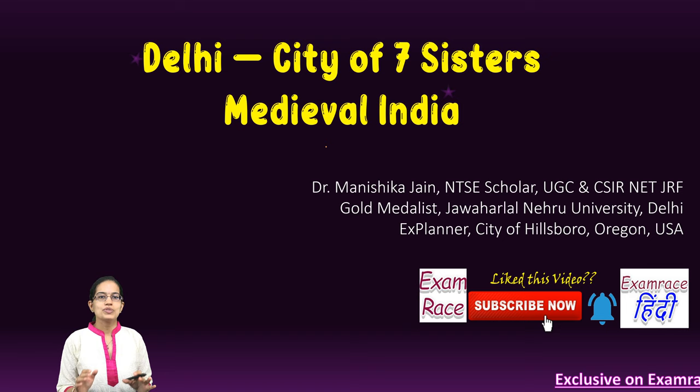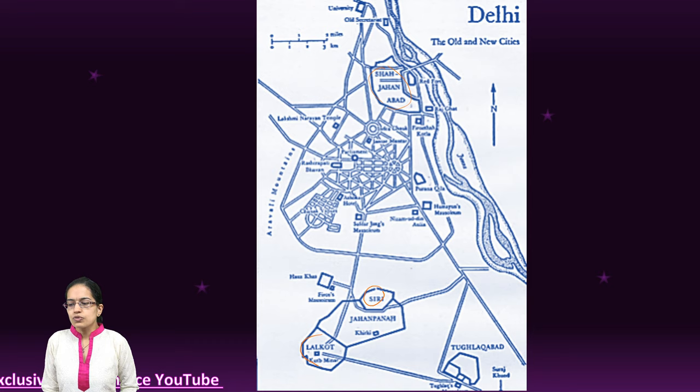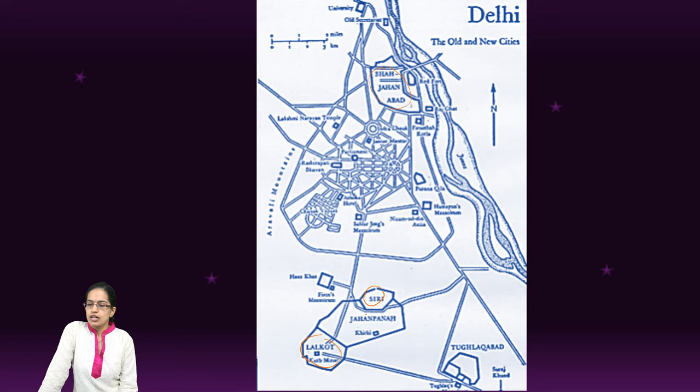If you look at one of the old maps, you can see closer to the Yamuna river you have the Red Fort, which is part of Shah Jahanabad. Then you have the region of Siri. Lalkot was the one that was started during the Tomar dynasty, and between Siri and Lalkot there is Jahanpana, and then you have Tughlaqabad.